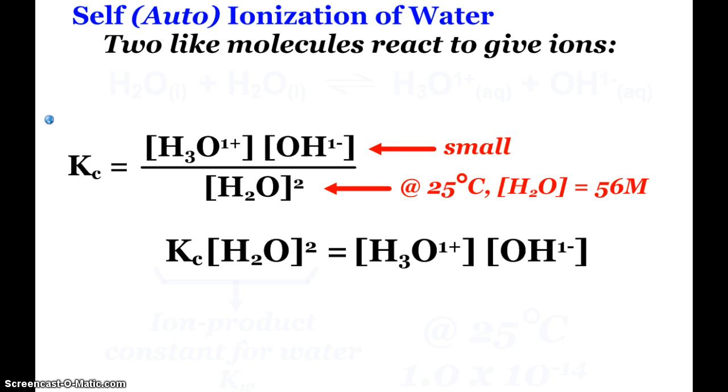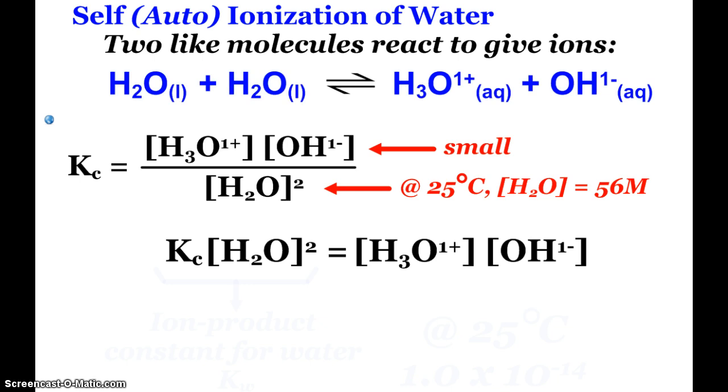But first off, we're going to go back to this self-ionization of water, the auto-ionization of water. Any self-ionization is when two like molecules react to give ions. So again, this is where we have two water molecules bumping into each other and we have the transfer of a hydrogen. So we create hydronium and hydroxide ions.